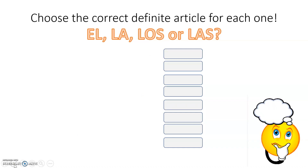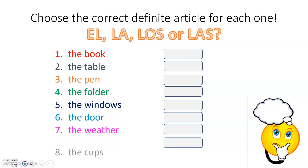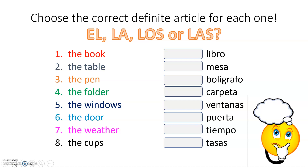I wonder whether you can put that into action. Can you choose the correct definite article for each of these? The book, the table, the pen, the folder, the windows, the door, the weather, the cups. If you're not sure of the Spanish nouns for those items, here they are on the side. You might want to pause the video here and try a few of these out, and try to recall how we can tell the gender of nouns. You might want to look back at our previous video to help you out with that if you need a reminder.